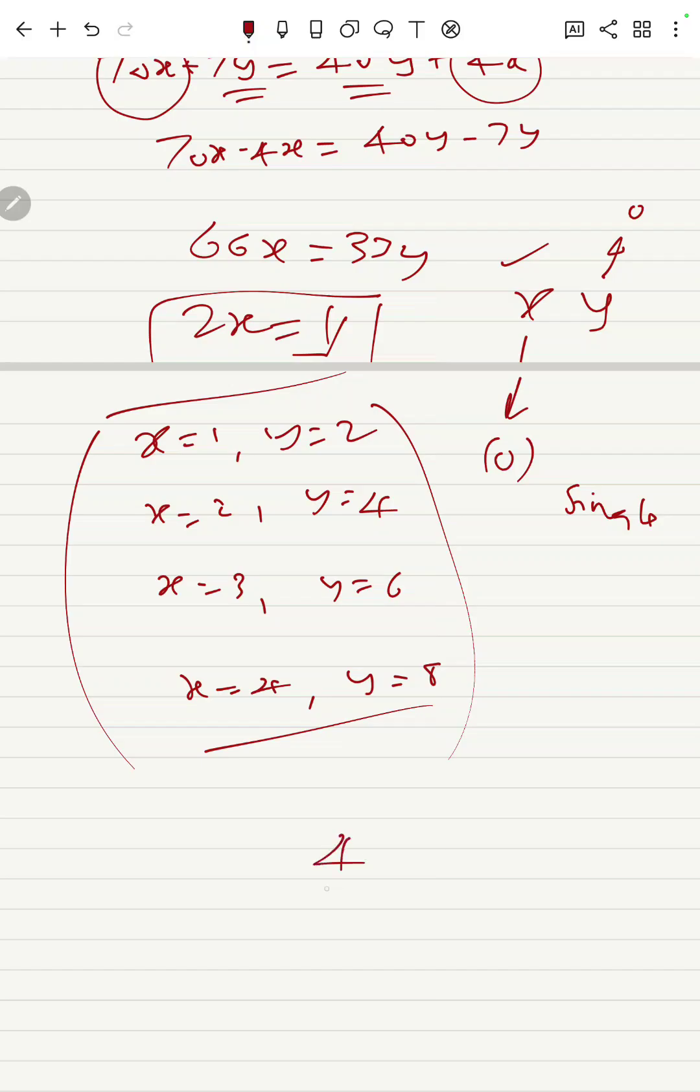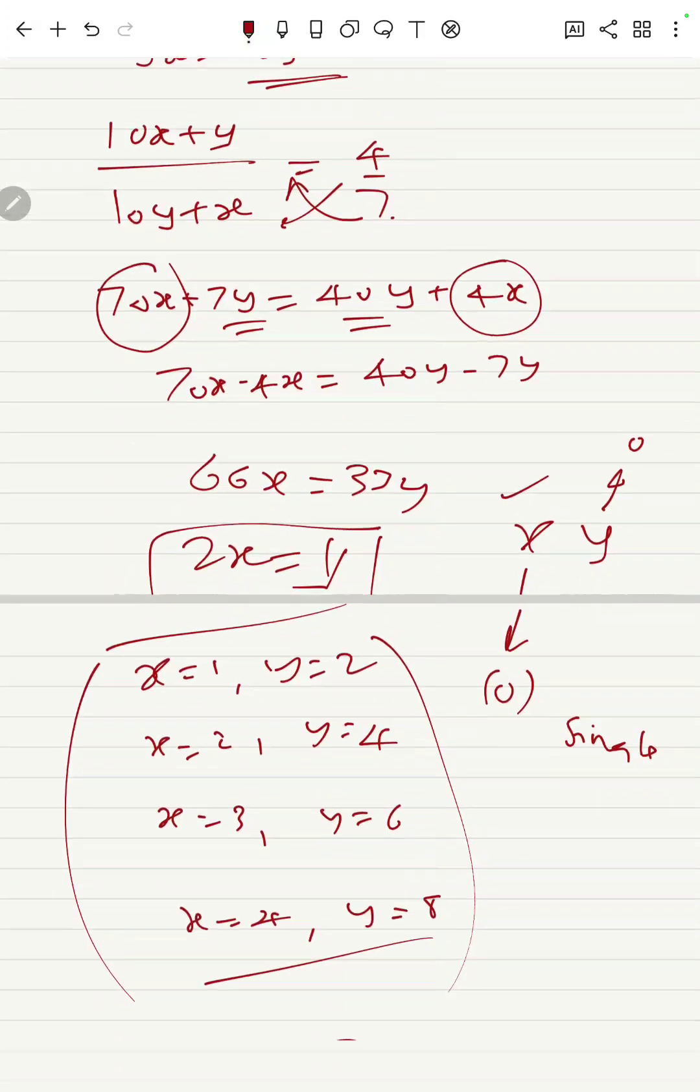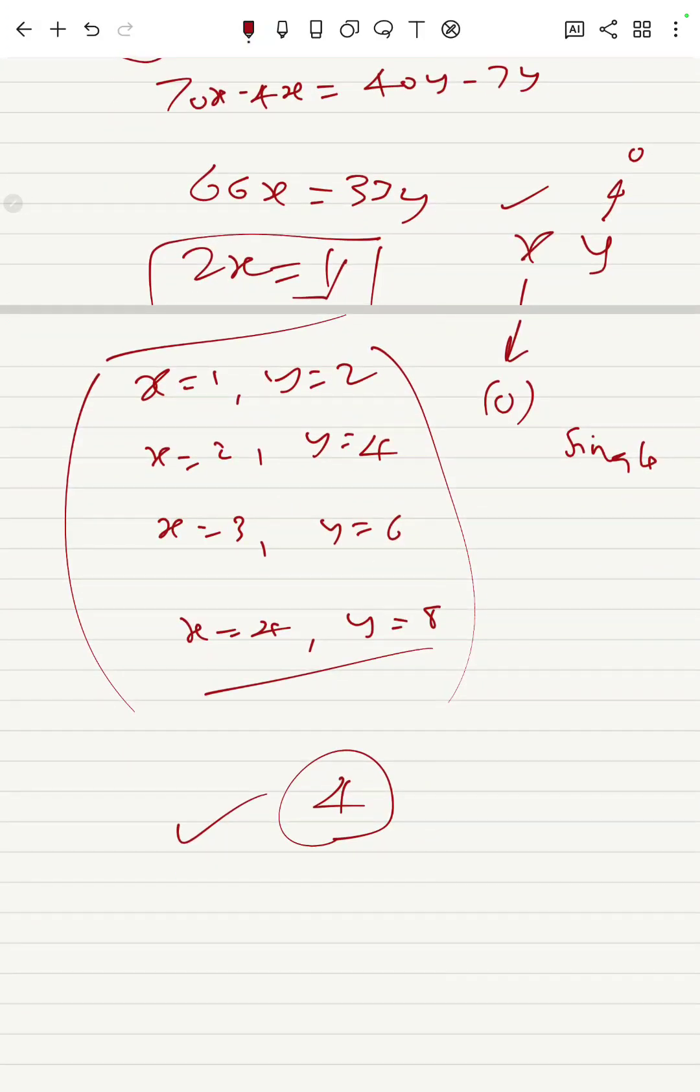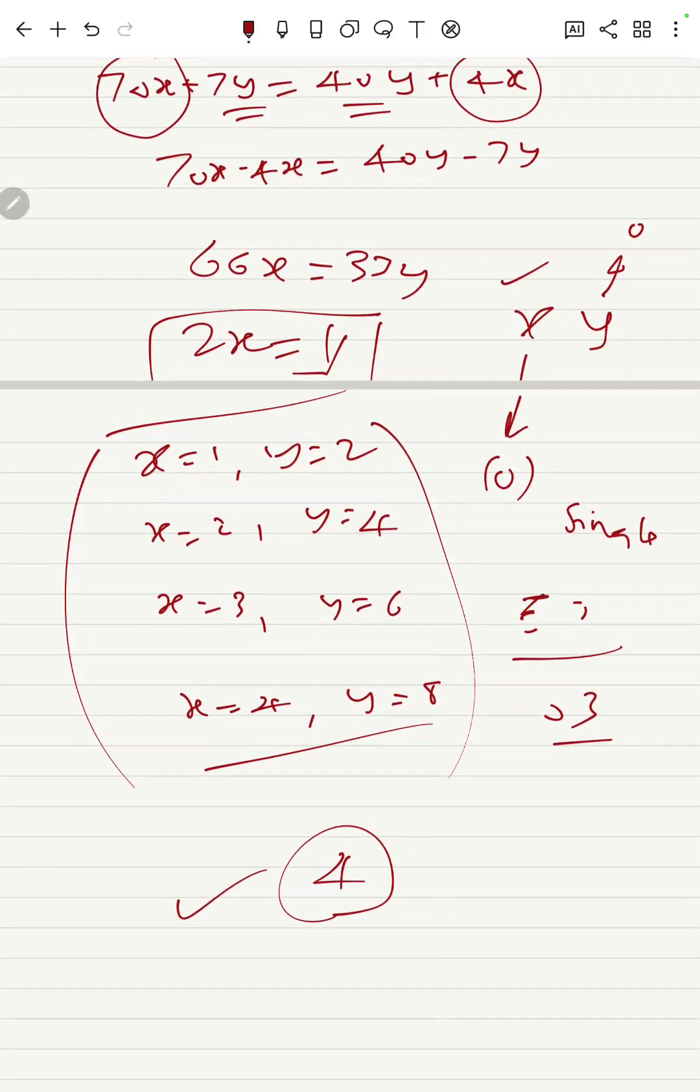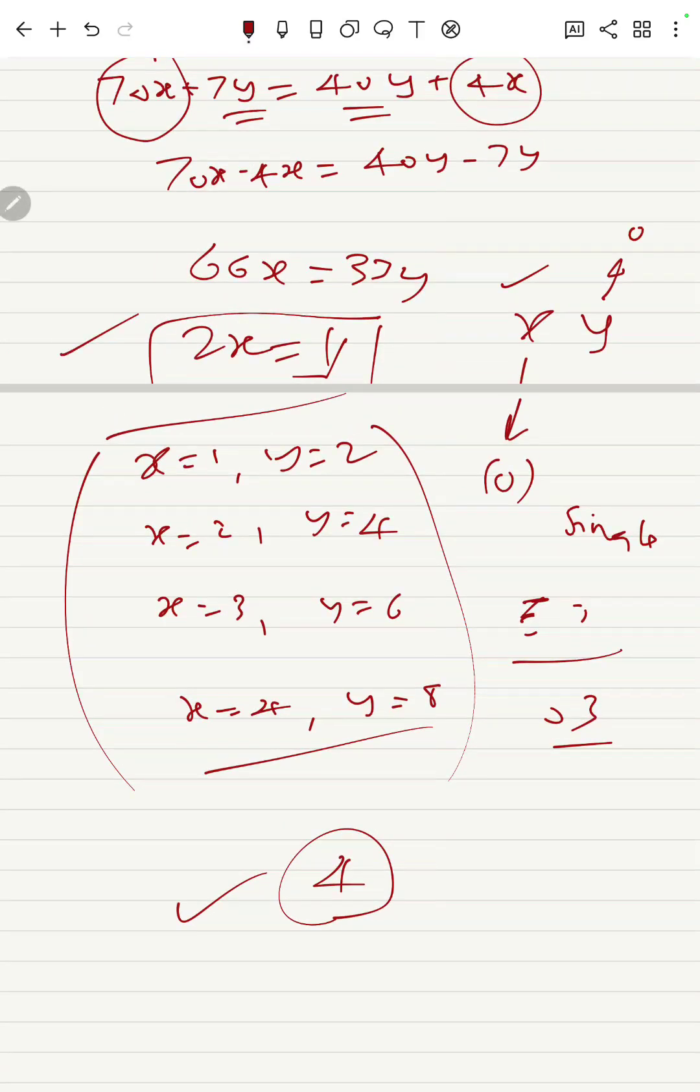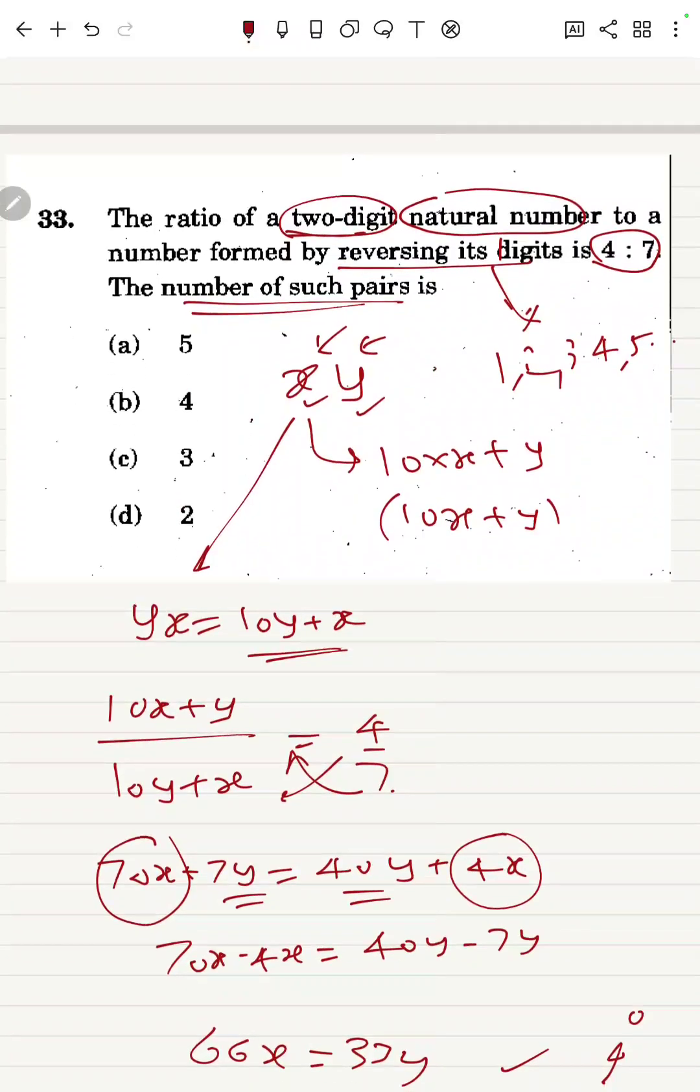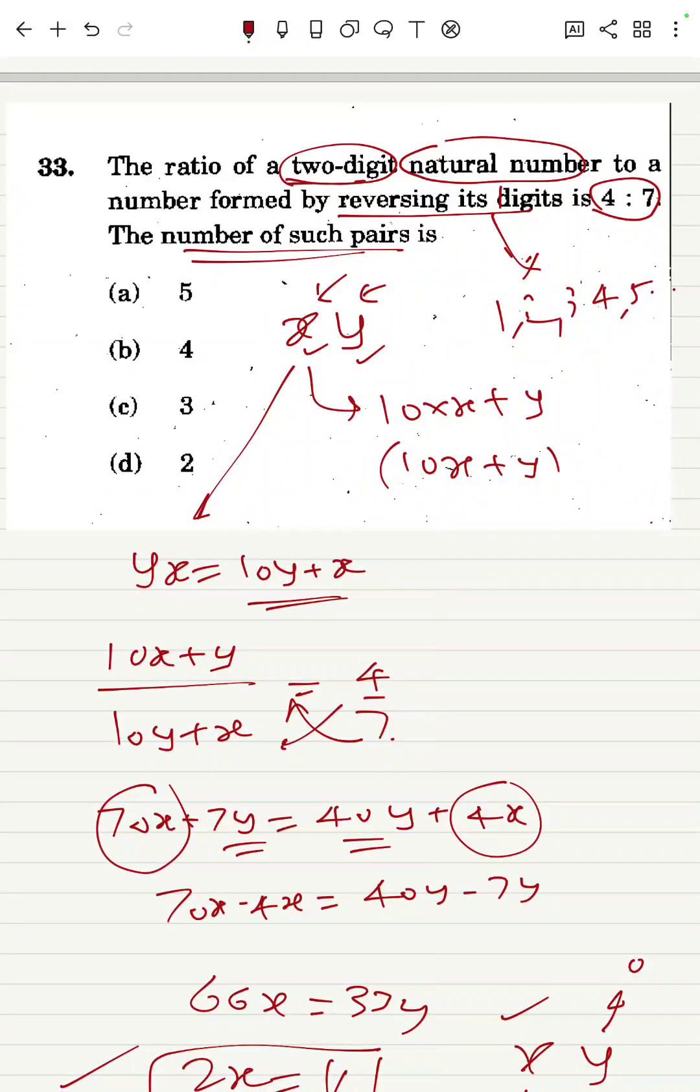So there are only four combinations possible which will give this answer. If you are confused about zero, if you take Y as 0, then on reverse it will become 03, and so it's not a two-digit number. So this is the combination which is possible—the total four combinations which are possible in this case.